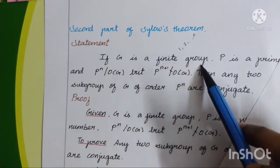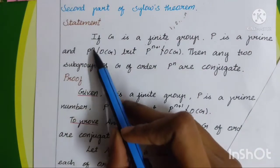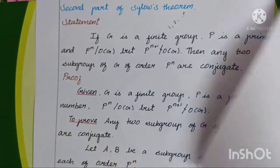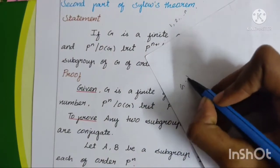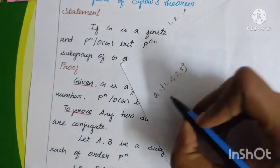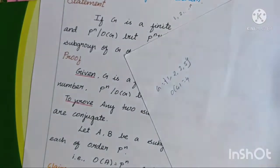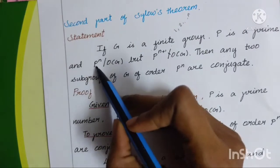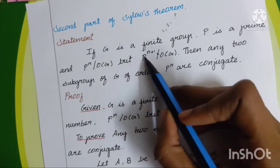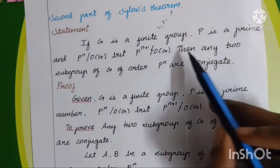G is a finite group. P is a prime number. And P power n divides order of G. The order of G is the number of elements in the set G. But P power n plus 1 does not divide order of G.